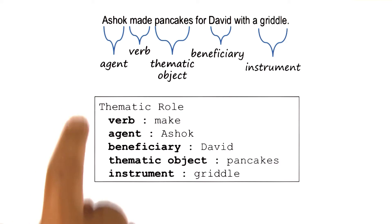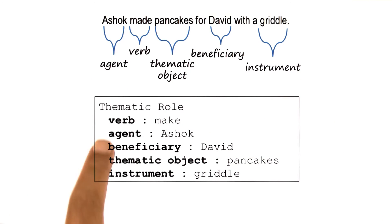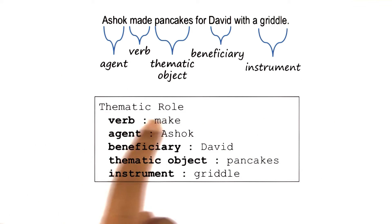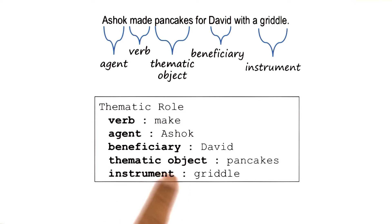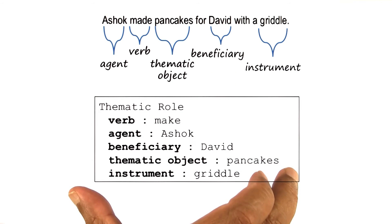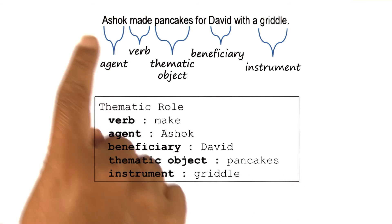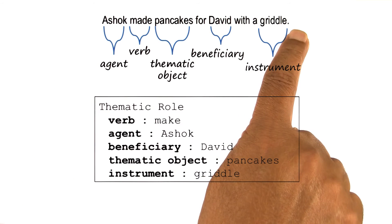The frame for representing understanding of this sentence has the verb or the action make, the agent Ashok, and so on, just like we just discussed. This, then, is the meaning of meaning. This is what the AI agent understands when it understands the meaning of this sentence.